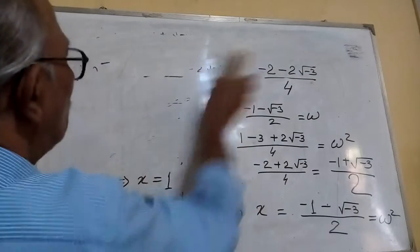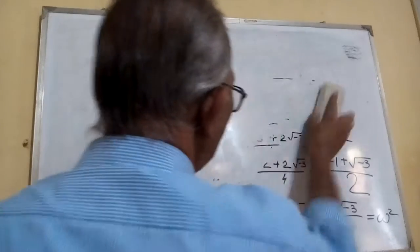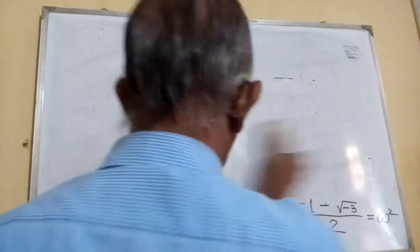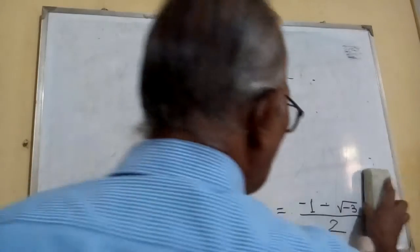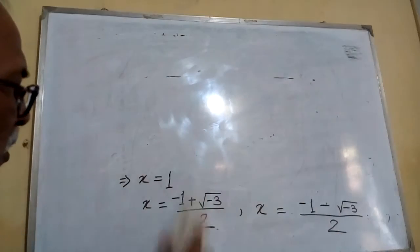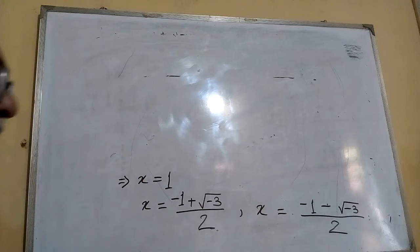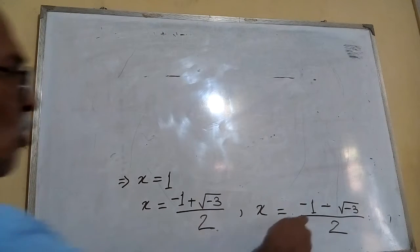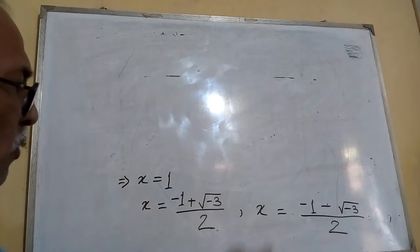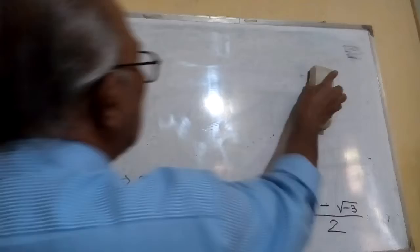You have to remember these three roots: one, omega, and omega square. Again I am repeating — if you call one of the complex roots omega, then you can call the other omega square. And if you reverse them, calling the second one omega, the first becomes omega square.